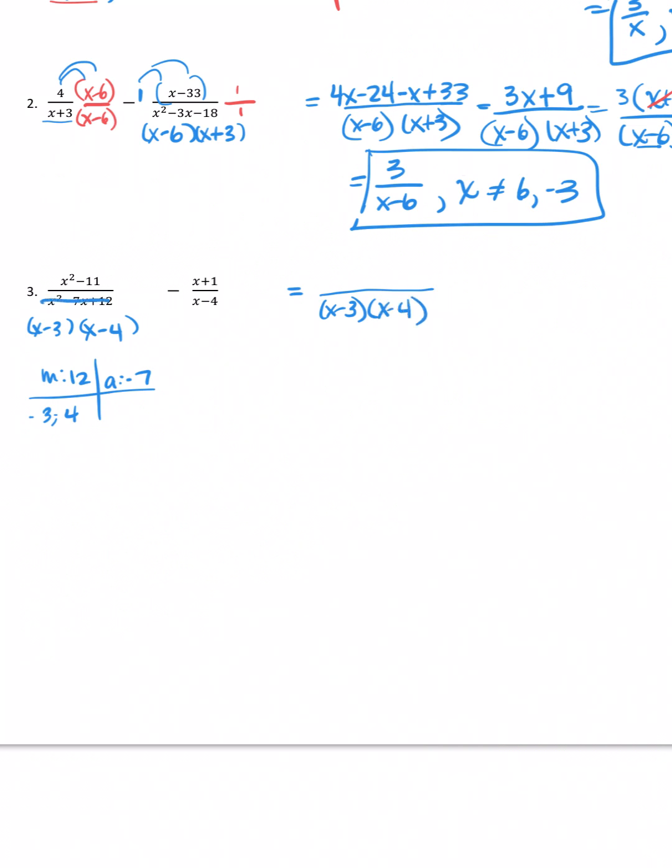When I consider my common denominator, I've got to have those. x minus 3, x minus 4. So, this guy's good to go. But the second expression, I need the x minus 3. So, what I do to the top, I have to do to the bottom. Remember, this is just a 1. This one, I'm really not multiplying it by anything, but a 1 to get that common denominator.